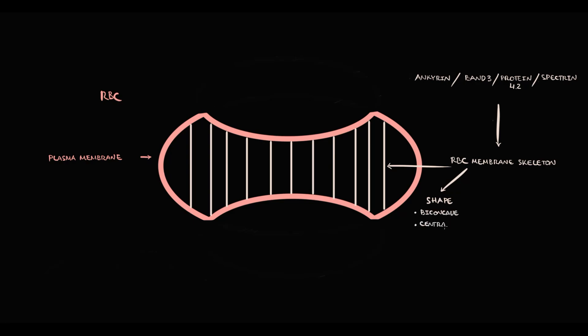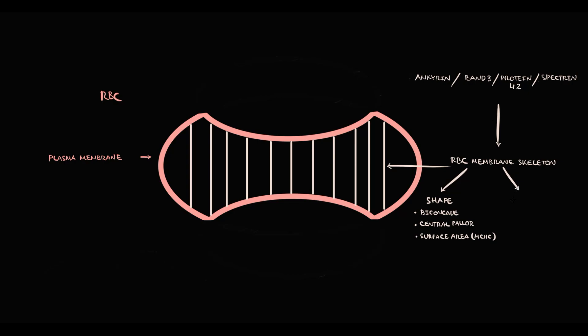Red blood cells with biconcave shape have central pallor and a normal surface area, which determines mean corpuscular hemoglobin concentration. In addition, the cytoskeleton provides osmotic resistance to red blood cells.